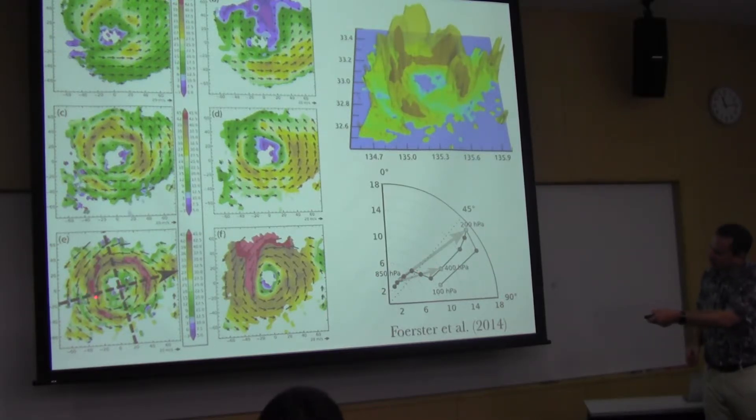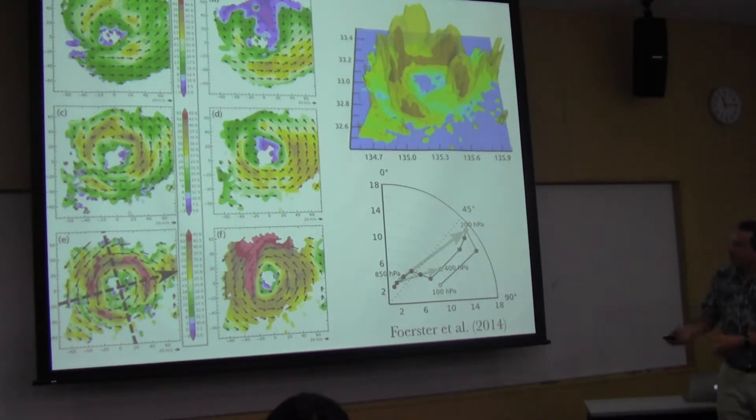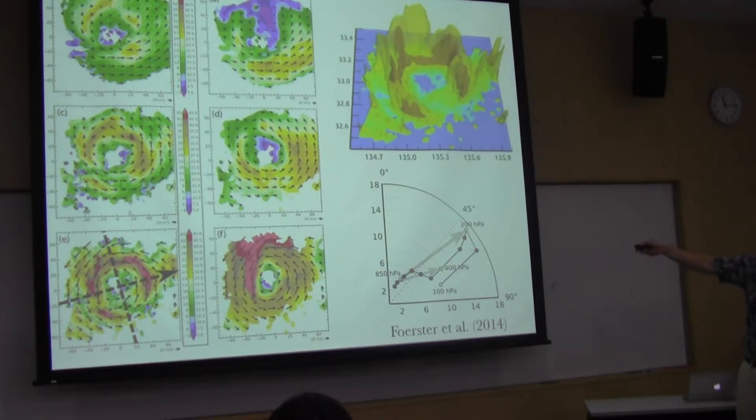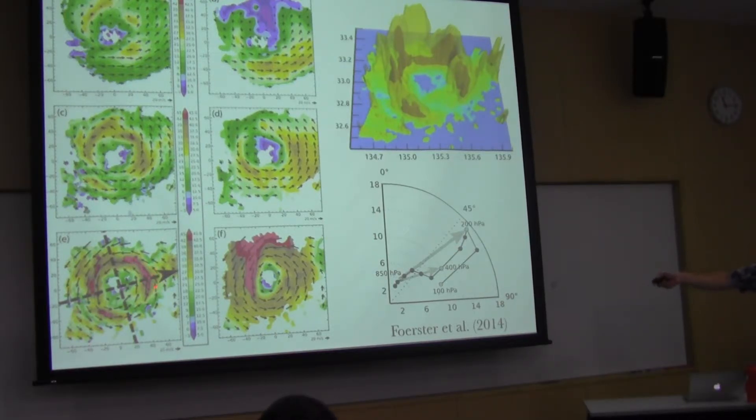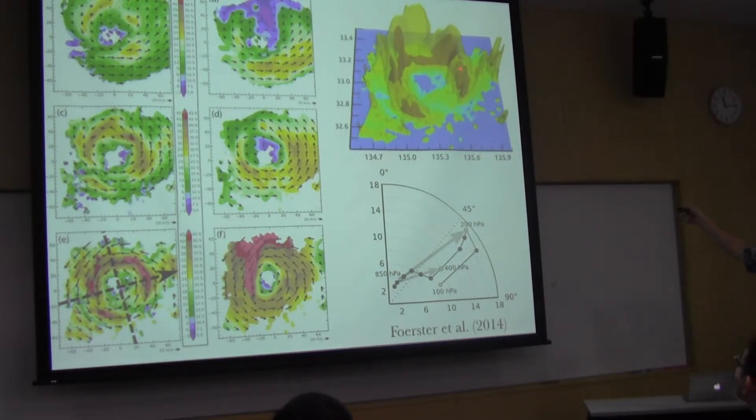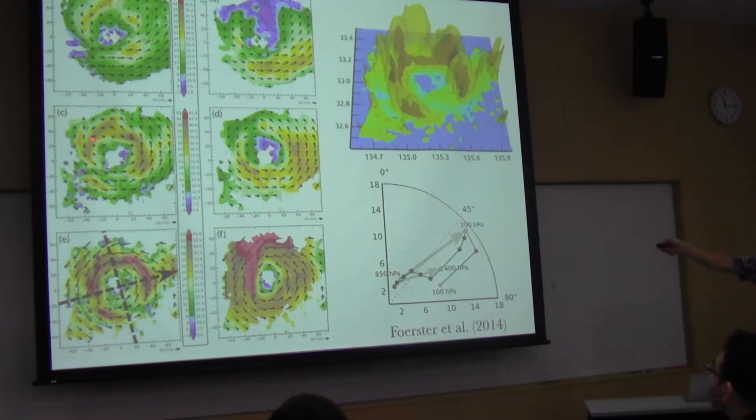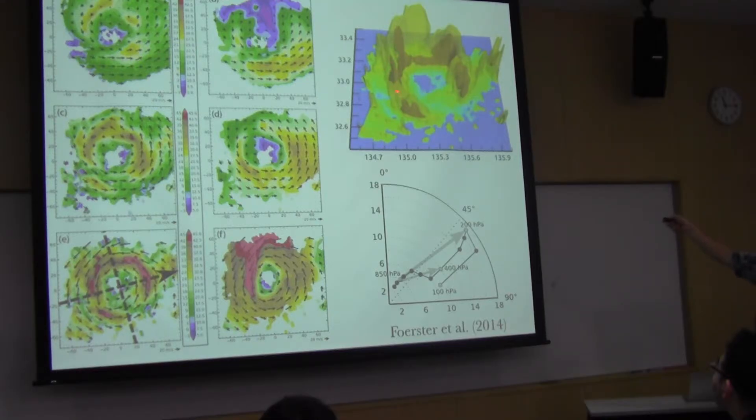You'll notice that the reflectivity matches our conceptual model of downshear left and left of shear maximum in the reflectivity. But you'll notice that as you go higher in this storm that reflectivity maximum actually shifts downshear. It rotates from here to here. If we look at it in three dimensions, we see that this strongest convection is, in fact, in the downshear direction. But then a lot of the hydrometeors that are being generated here in this deep convection are actually falling out over here as they fall out downshear.